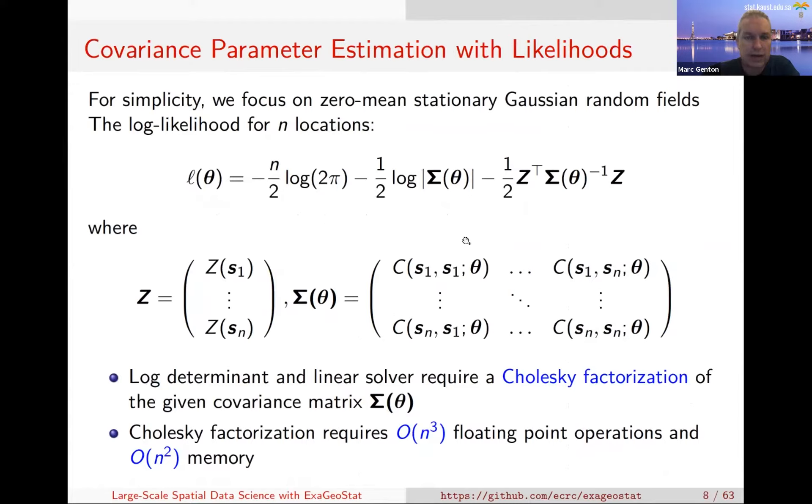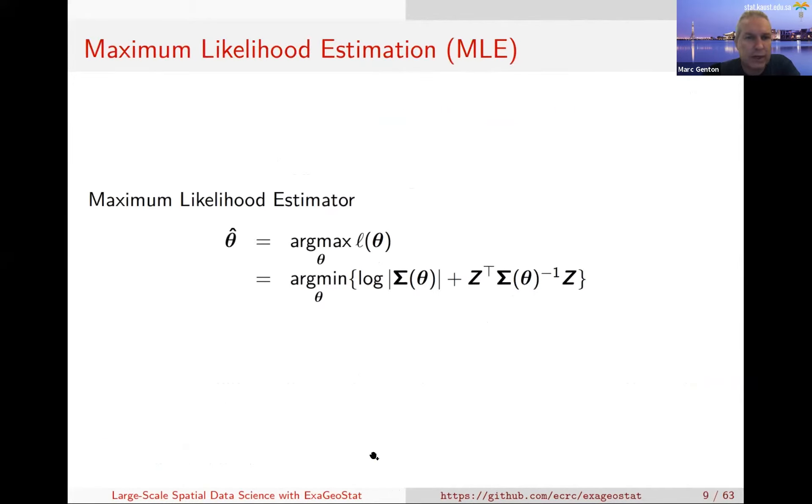We're going to do this with likelihood methods. We can write the Gaussian likelihood, it's a multivariate normal distribution. Z is the vector of observation at n locations. The matrix sigma is n by n. When n becomes large, it becomes very big. Because this log likelihood has the log determinant and quadratic form in the inverse of sigma, we'll need Cholesky factorization of sigma, requiring O(n³) floating point operations and O(n²) memory.